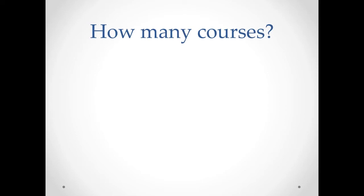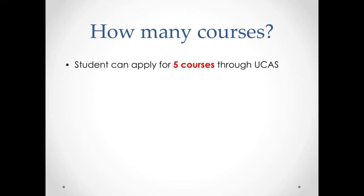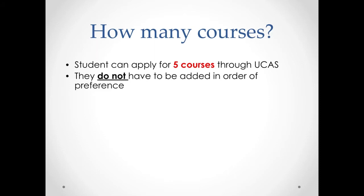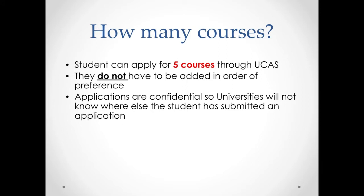Students can apply for five courses through UCAS. They don't have to add courses in order of preference — this is different to CAO, where the course you want most has to be at the top. In UCAS, applications are sent independently to each of the five universities. It's important to understand that applications are confidential: one university won't know who else you've applied to. We would advise that students don't mention any university by name in their personal statement.